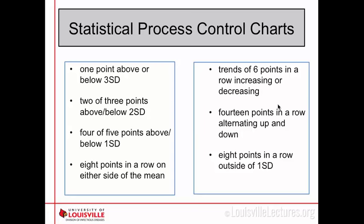If four out of five consecutive points are outside of one standard deviation — where you'd normally expect roughly two-thirds of your data — that also gives you cause for concern. It's very possible to be breaking multiple rules at the same time. There are also rules similar to a run chart: eight points in a row on either side of the mean, six or more points consecutively increasing or decreasing, and 14 alternating points. Additionally, eight points in a row inside one standard deviation would indicate potentially too much stability in your data.